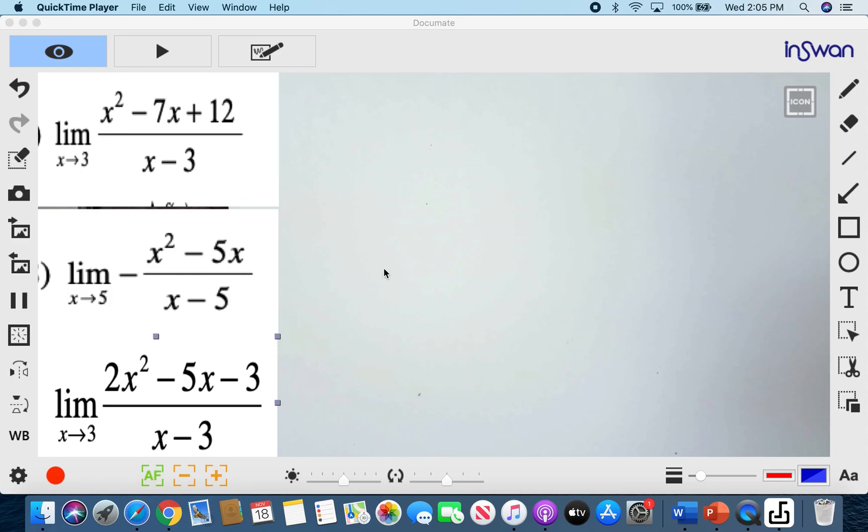We will now proceed to the limits of rational functions. These are rational functions because they are expressed as a ratio between two expressions. Now this one is as x approaches 3.